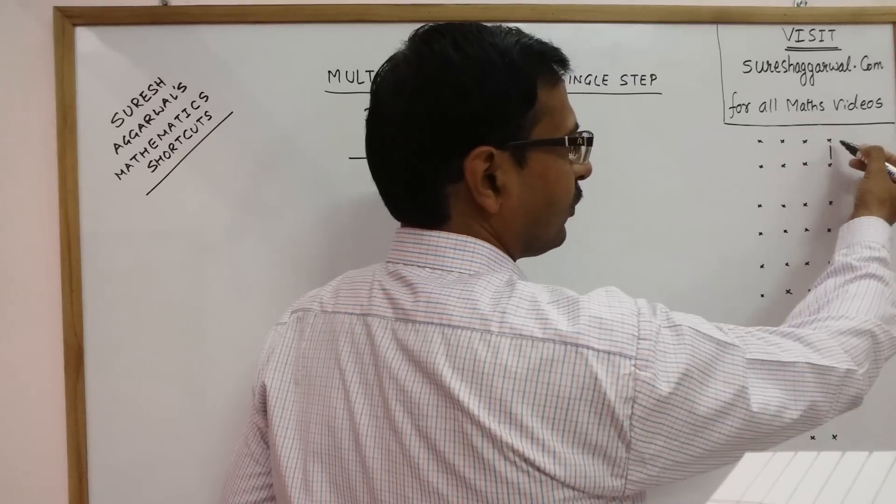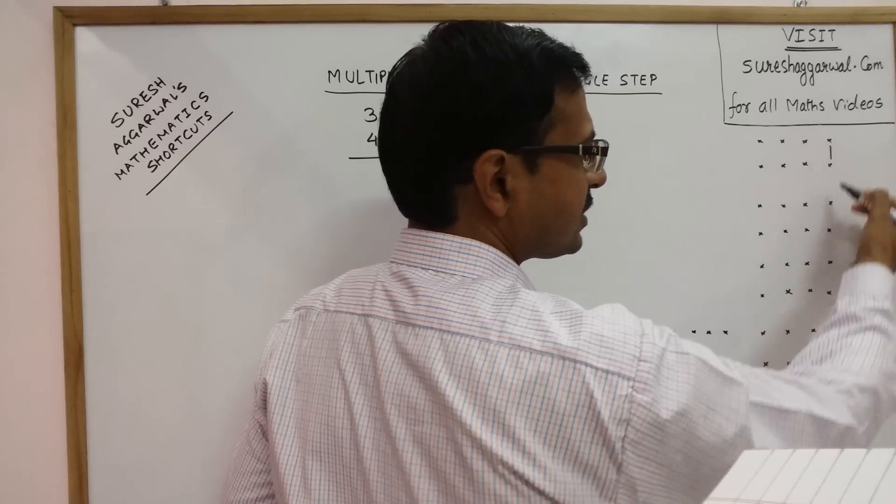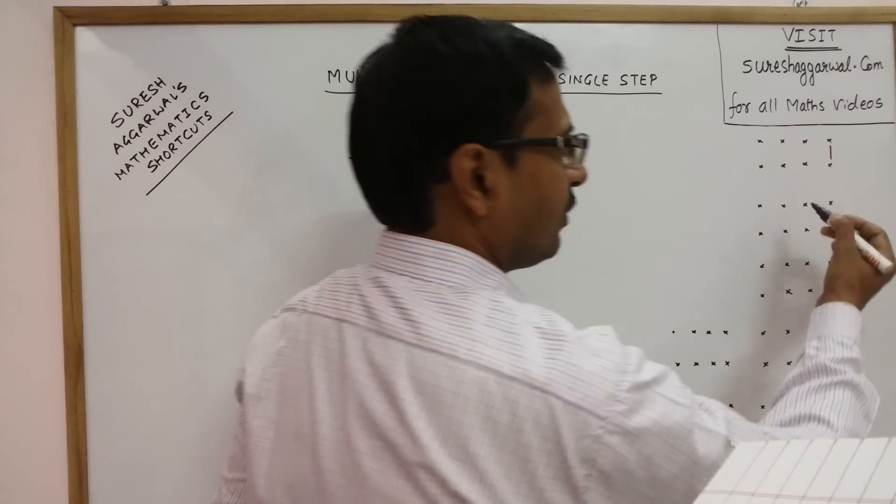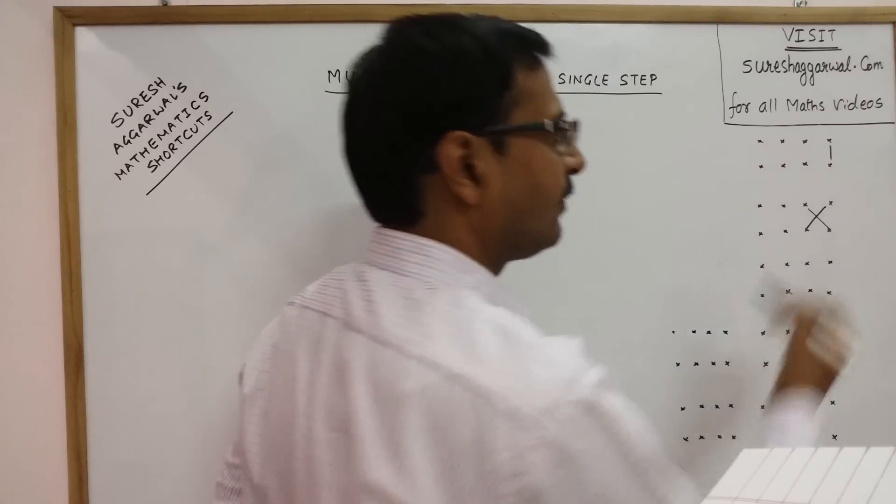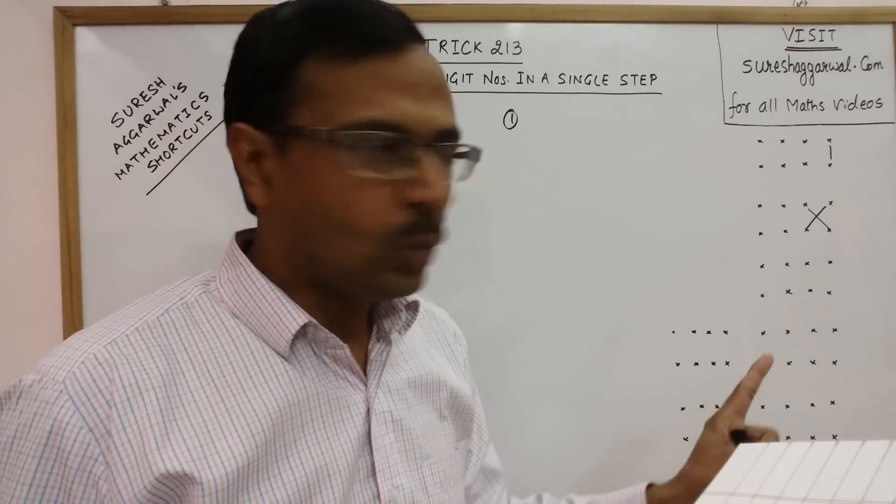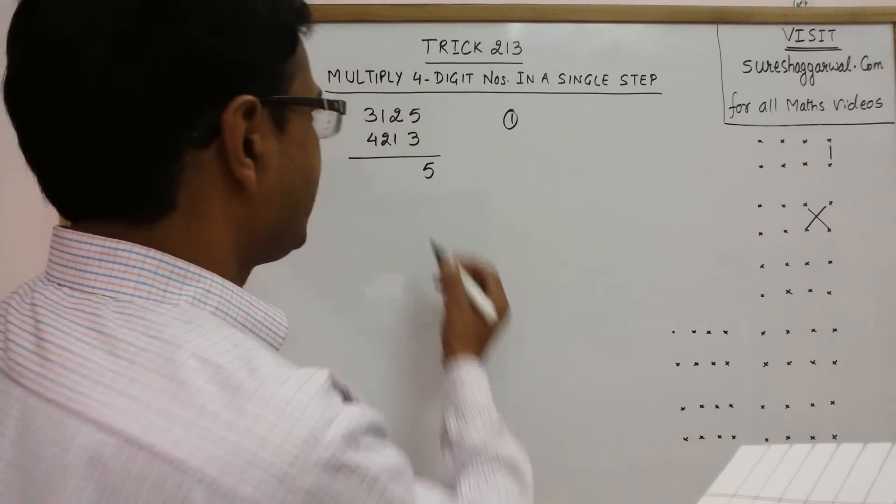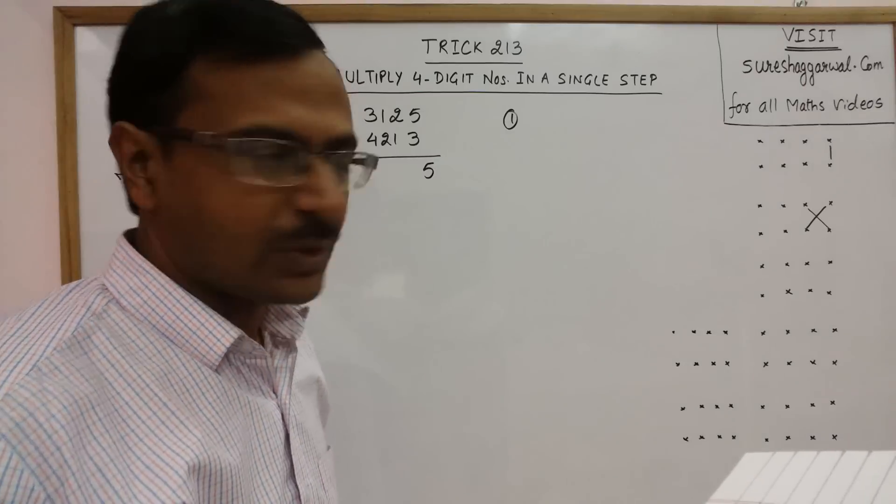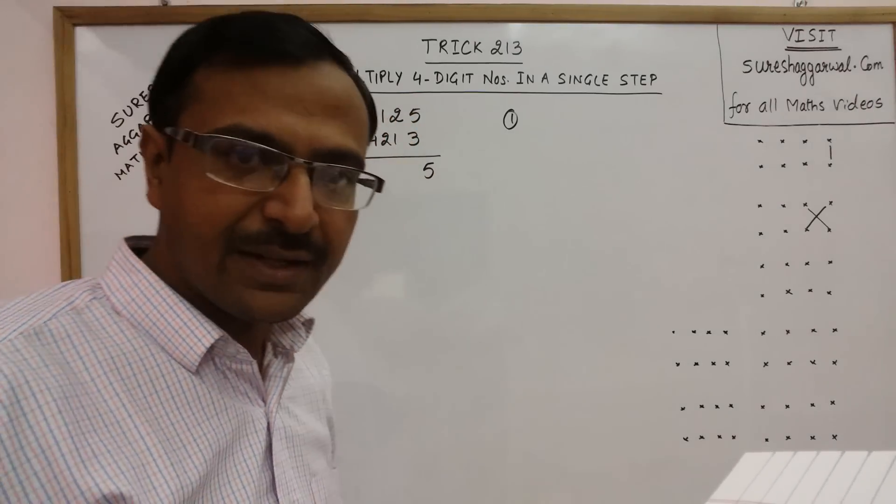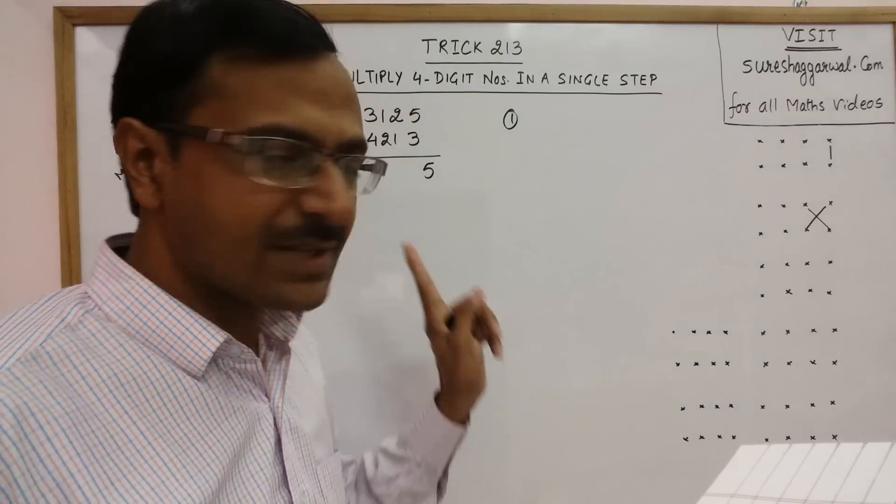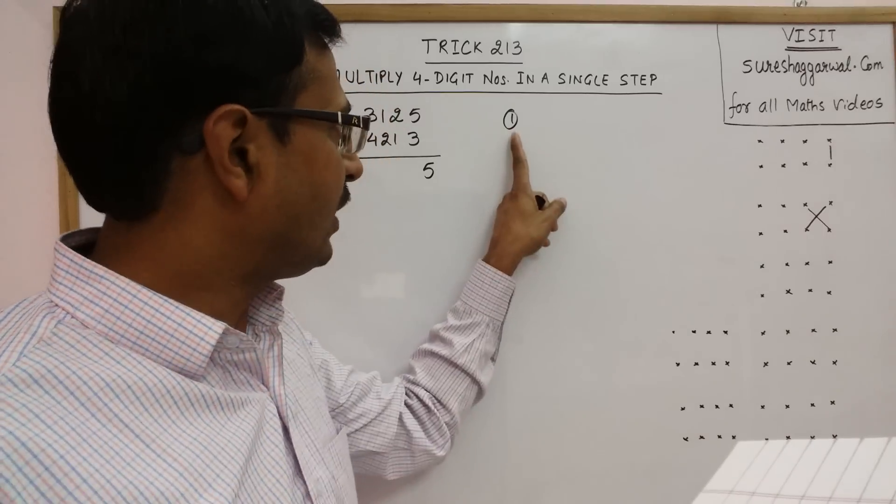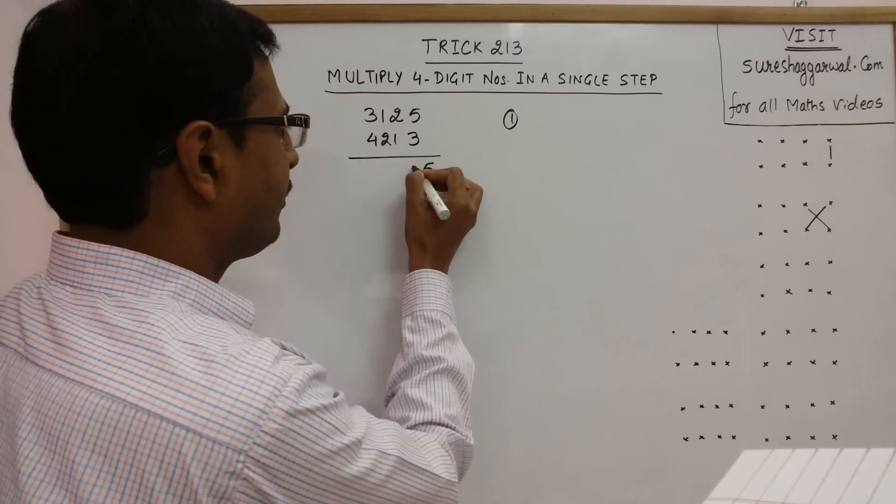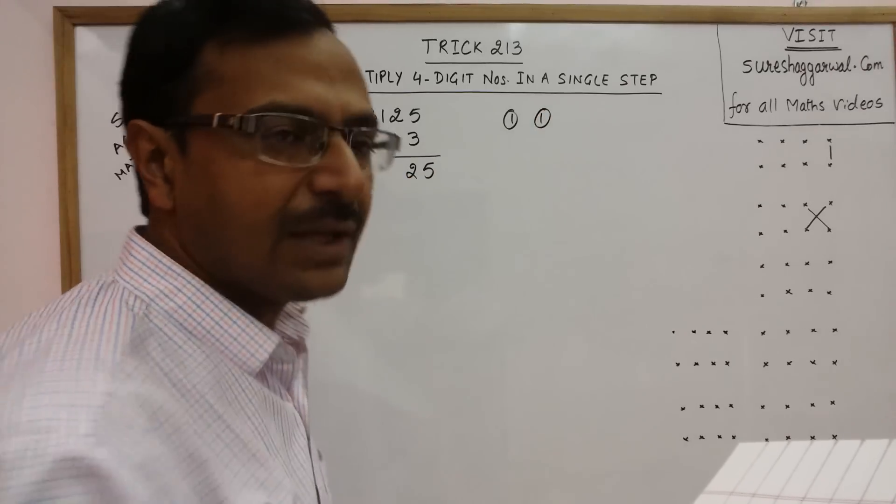In the second step, we have taken only the unit digits. Now we need to take the unit digit and the tenth digit, so 2 pairs. Whenever you have 2 pairs, just cross multiply and add the 2 products. Here we have 3 times 2 is 6 and 5 times 1 is 5. Add them: 6 plus 5 gives us 11 and you have 1 carry also, so that gives us 12. Now you have 2 and again 1 is carry.